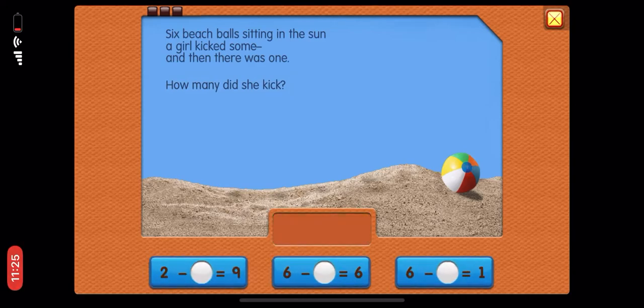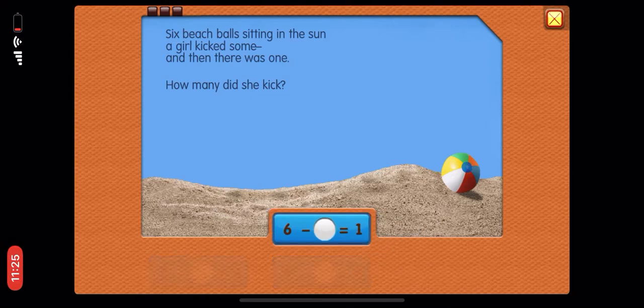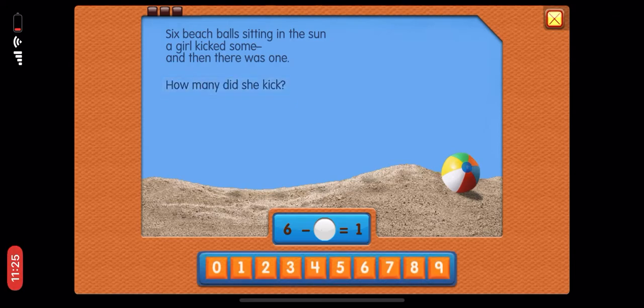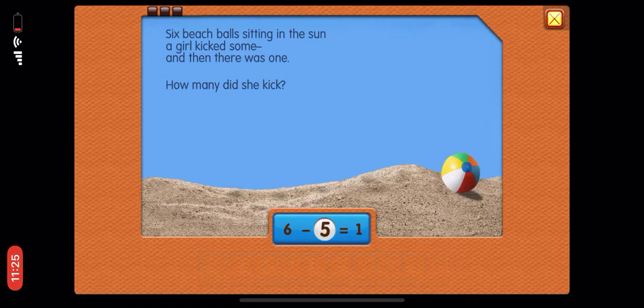Let's make an equation to solve this. Now let's solve the equation. How many did she kick? Five. Yes, correct. Six minus five equals one.